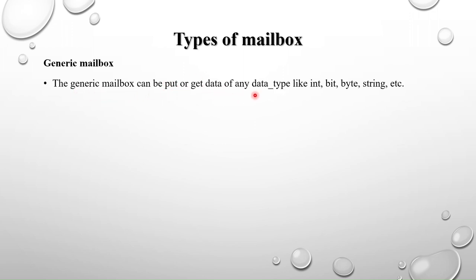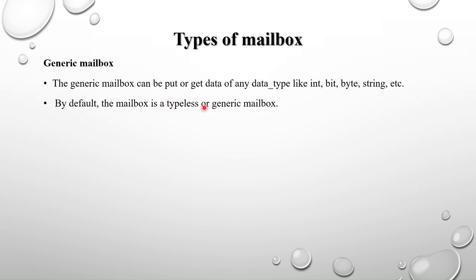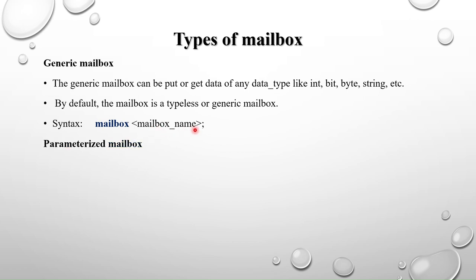A generic mailbox can put or get data of any data type — int, bit, byte, string, etc. There is no restriction on the type of data. By default, the mailbox is a typeless or generic mailbox. The syntax is: mailbox mailbox_name — where 'mailbox' is the keyword, similar to how 'semaphore' is used for semaphores, and mailbox_name is the handle.